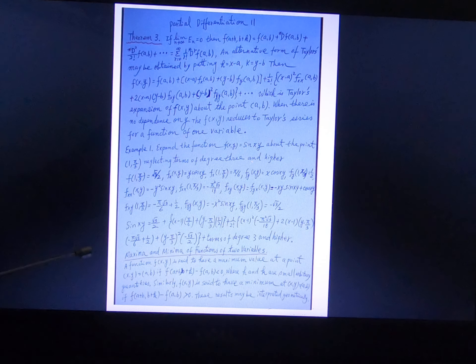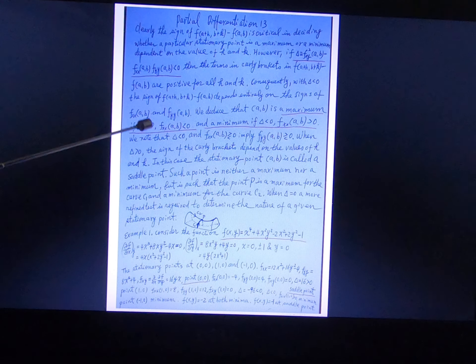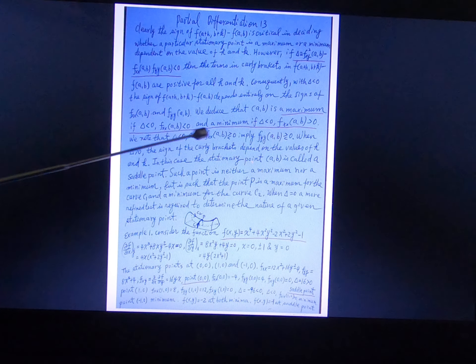We can use this to find maximum, minimum, or saddle points for two variables. For maximum and minimum: if delta is less than zero and f_xx is less than zero, it is a maximum; if delta is less than zero and f_xx is greater than zero, it is a minimum. If delta is greater than zero, it is a saddle point; if delta equals zero, you need to investigate further.